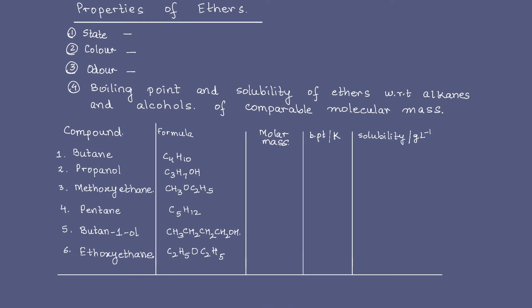Properties of ethers. If you see over here, I have left the state, color, and odor blank. I am not going to fill the blanks because I would want you to refer to your textbook. It will give you an excuse to open your textbook and at least have a look into it as to what all is covered. We are going to talk in greater detail about the boiling point and solubility of ethers today, and we shall do that in comparison to alkanes and alcohols of comparable molecular mass.